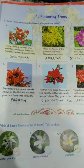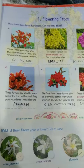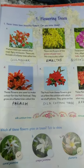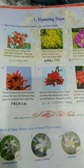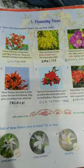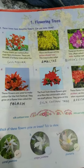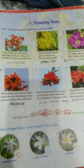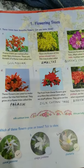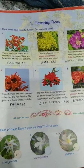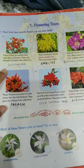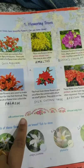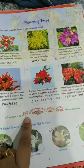So students, please open page number 1. See question number 1. These trees have beautiful flowers — can you name them? Some pictures are given here and just under them, some information is given. What you have to do is identify these pictures by reading the information given below and write the answer in the blank. You have to pick the answers from the options provided.